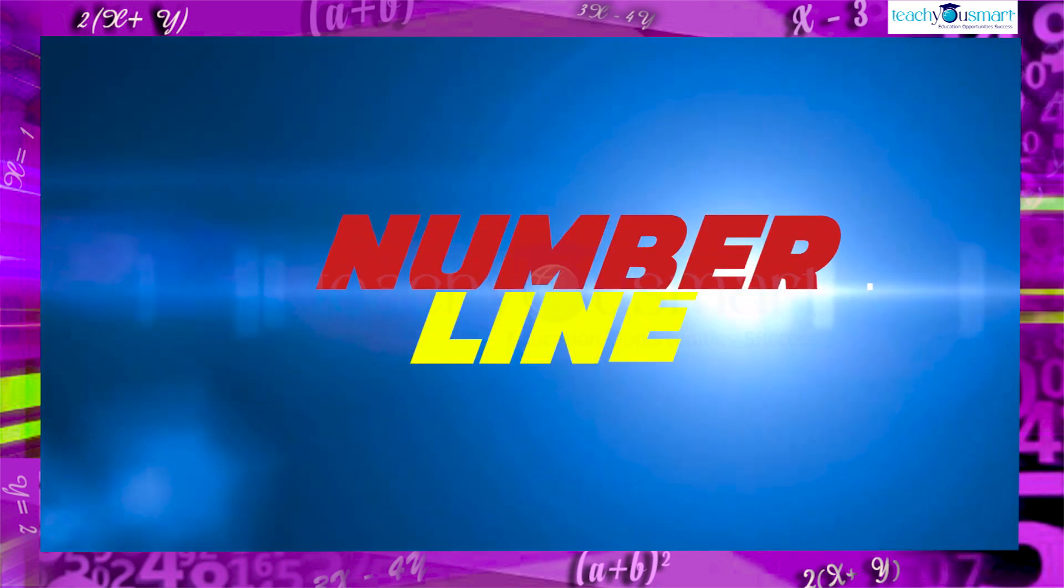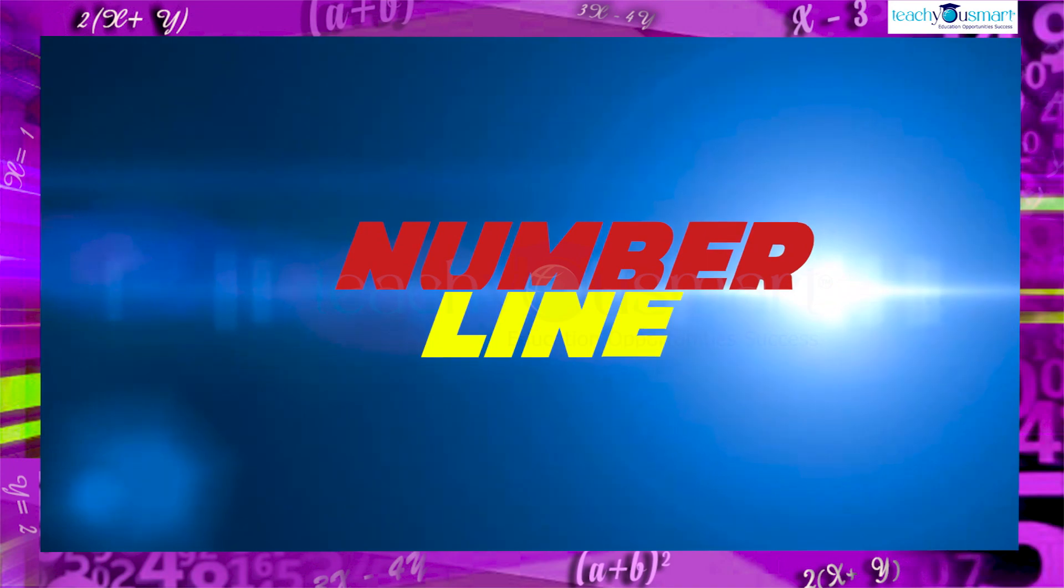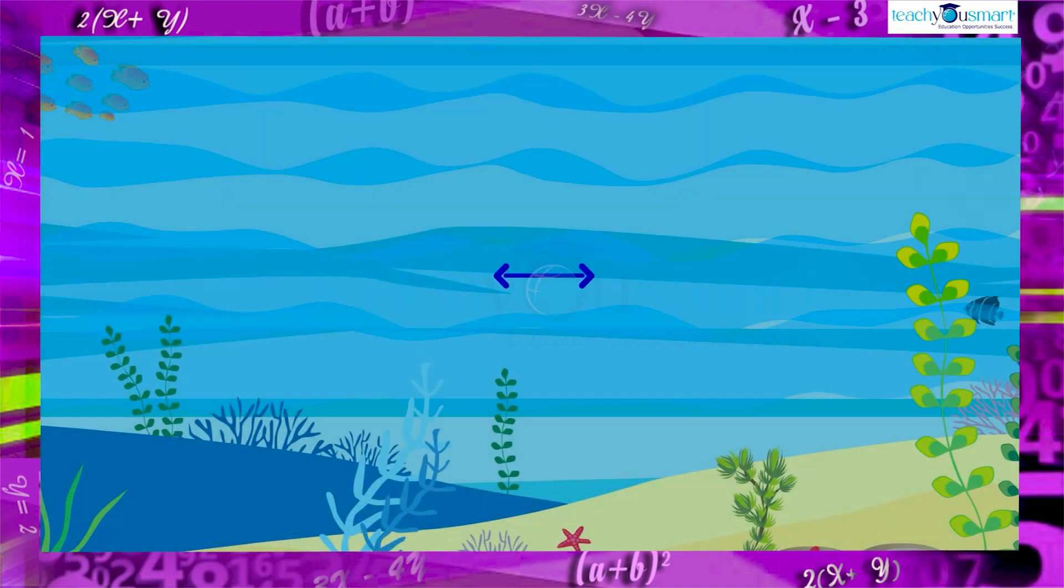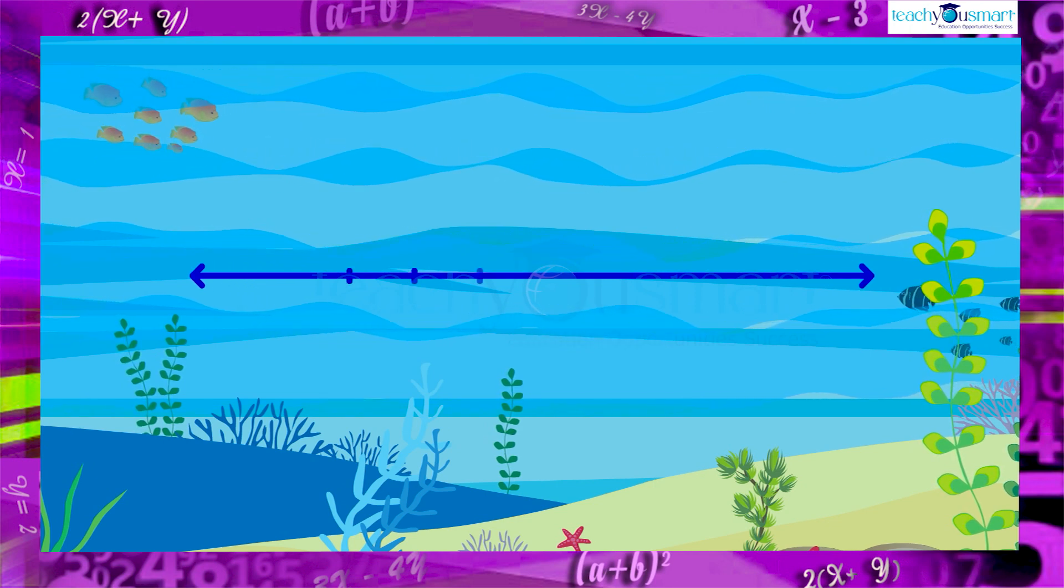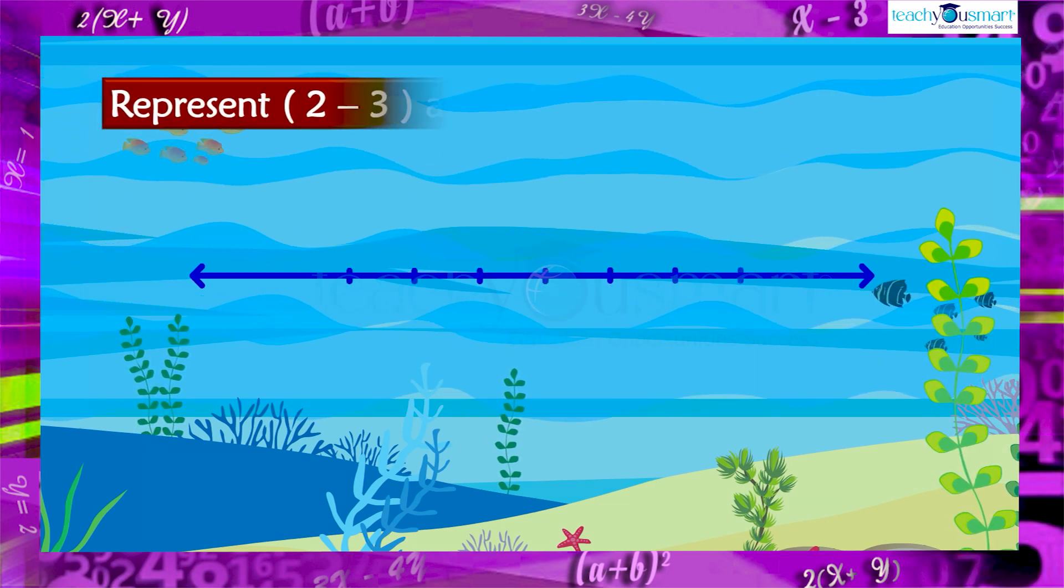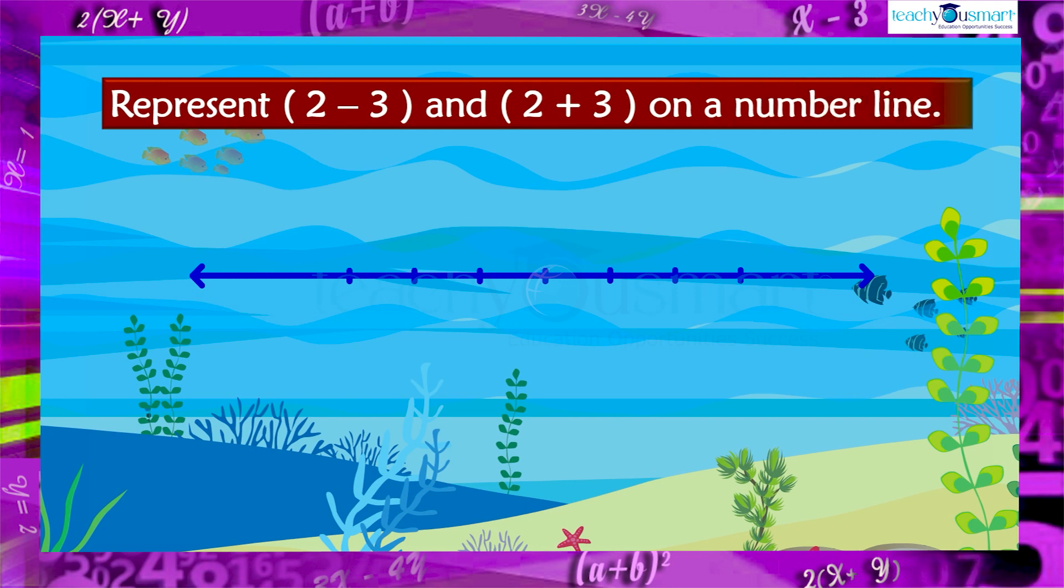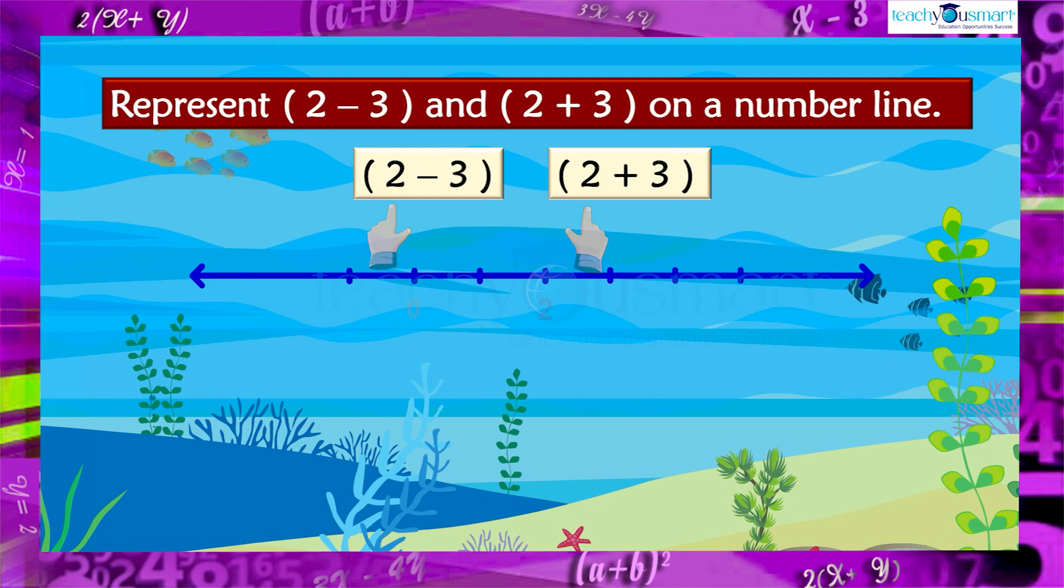We can represent these expressions on a number line. We know how to represent a number or a constant on a number line. Let's see how we will represent two minus three and two plus three on a number line. For representing the expression two minus three and two plus three on a number line, we take two as initial point.